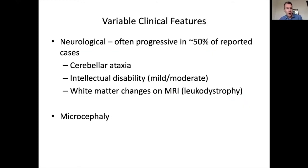Over the last few years it's become apparent that a number of people affected by Perrault syndrome also have neurological problems, which are often progressive and develop over time — balance problems including due to cerebellar ataxia, variable degrees of intellectual disability, and when we look at brain scans we often see changes in white matter consistent with leukodystrophy. A small number of patients also have microcephaly.